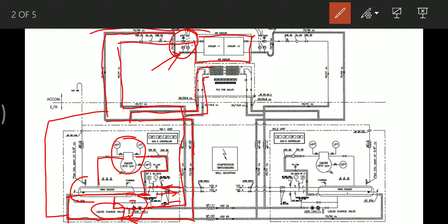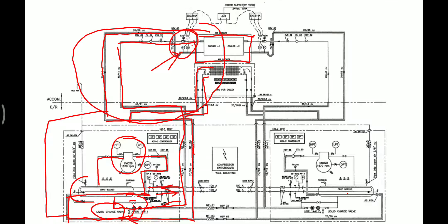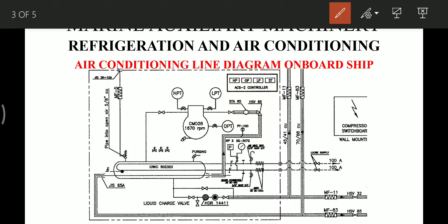Now let's look at each part separately. The compressor has a low pressure transmitter, a high pressure transmitter, and an oil pressure transmitter. There is an oil separator, though it is not shown in this diagram. There is also an oil charging connection for the compressor. The solenoids shown are for loading and unloading the compressor depending on the cooling load on the system.